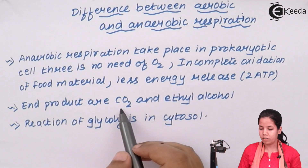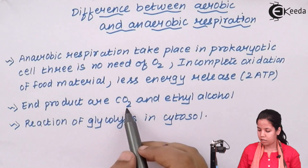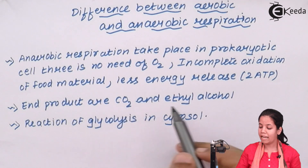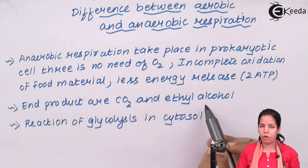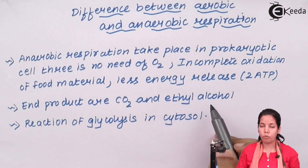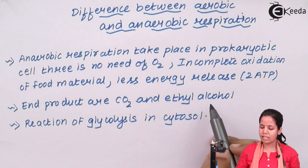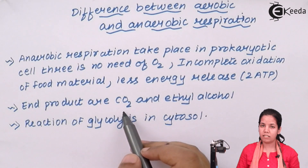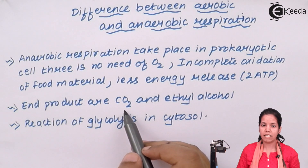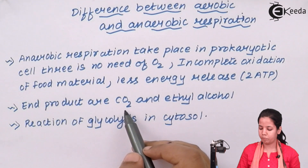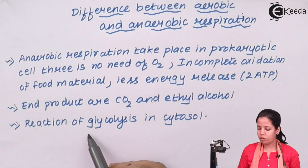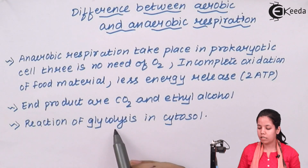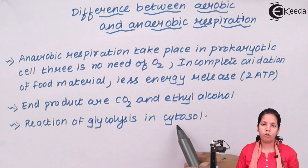The end products of anaerobic respiration are carbon dioxide and ethyl alcohol. Ethyl alcohol leads to fermentation, whereas carbon dioxide is used in some cases or is removed out of the system. The reaction of glycolysis in anaerobic respiration occurs in the cytosol.